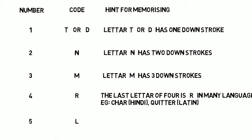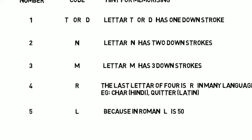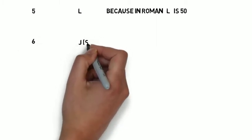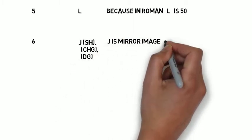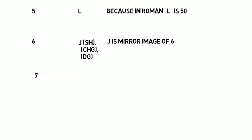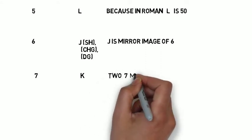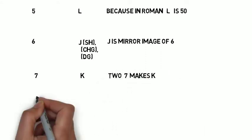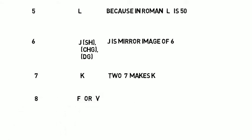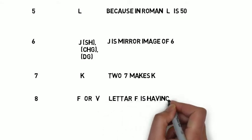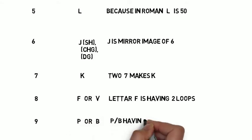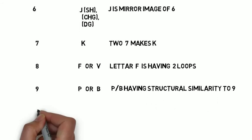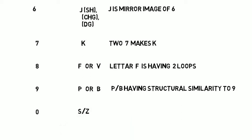Code 5 is L — because in Roman numerals L is 50. Code 6 is J, SH, or CH — as J is the mirror image of 6. Code 7 is K — because two 7s make a K. Code 8 is F or V — the letter F has two loops. Code 9 is P or B — as P or B have a structure similar to 9. Code 0 is S or Z.